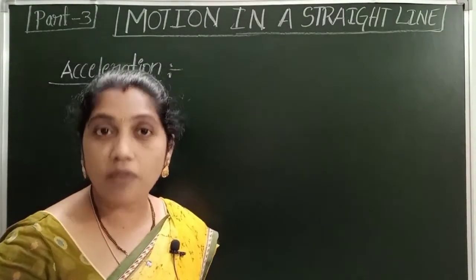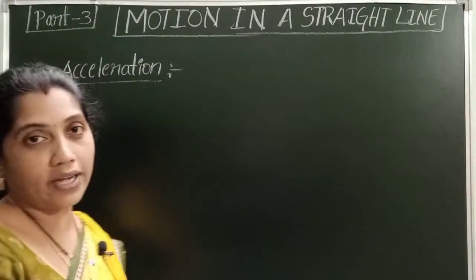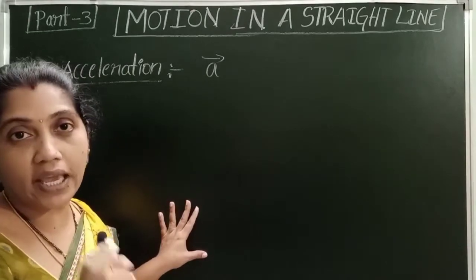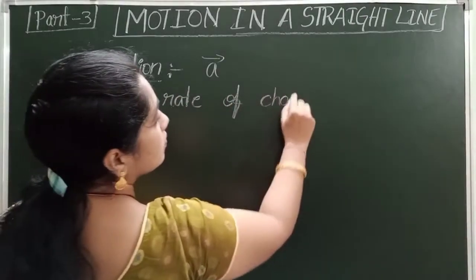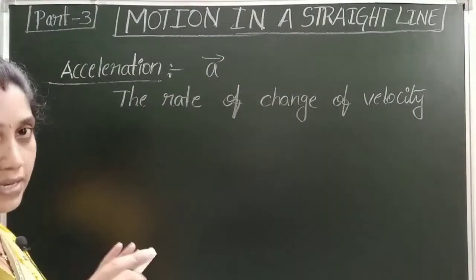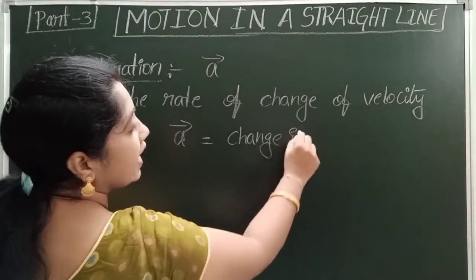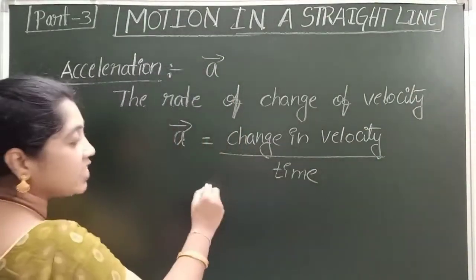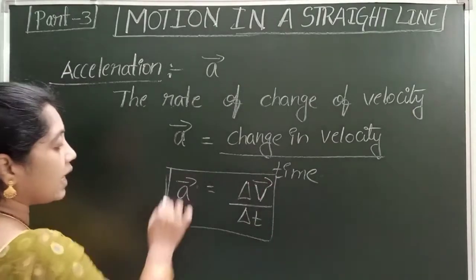Now coming to our topic: acceleration. Acceleration is also a physical quantity, along with distance, displacement, speed, and velocity. Acceleration is denoted with 'a bar' because acceleration is a vector quantity. The rate of change of velocity is called acceleration. So acceleration a-bar equals change in velocity divided by time, written as delta v-bar by delta t.